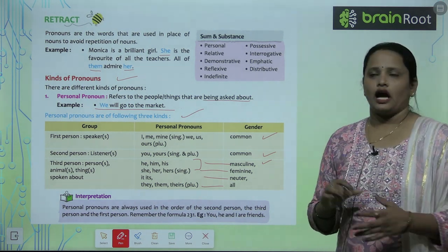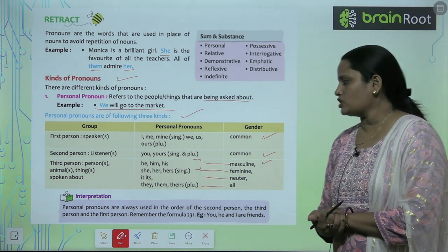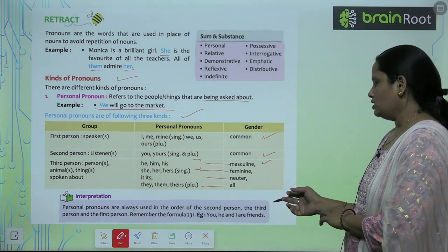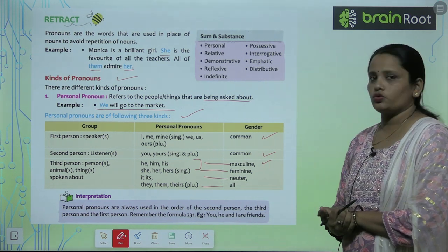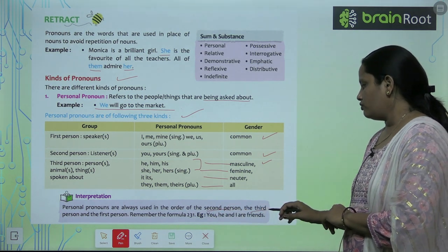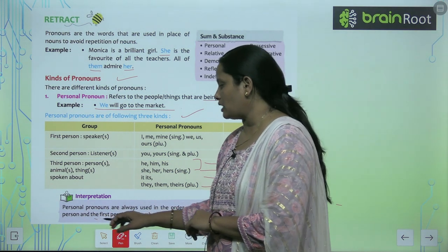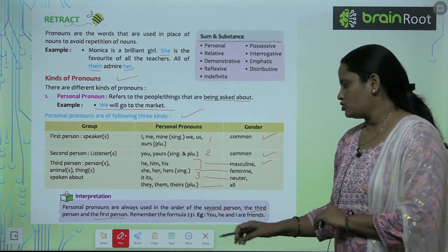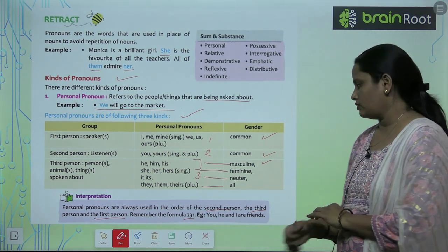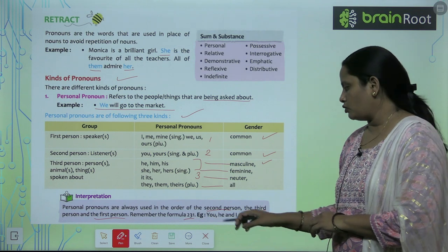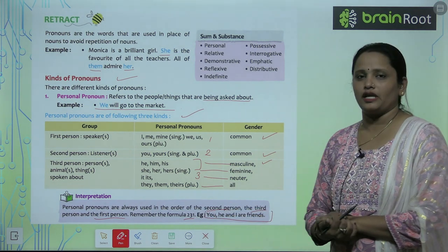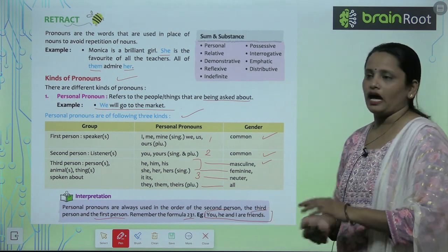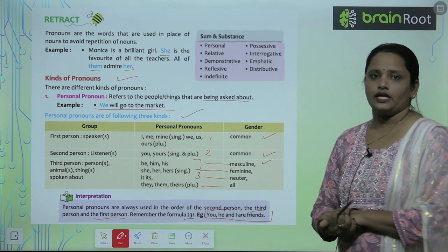Person pronouns are always used in the order of second person, then third person, then first person. Remember the formula: two, three, one. So when all three persons appear in a sentence, you write: 'You, he and I are friends.' You is second person, he is third person, and I is first person.